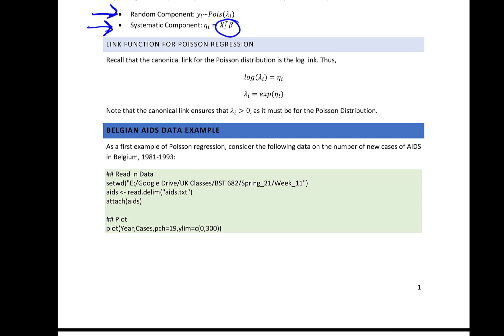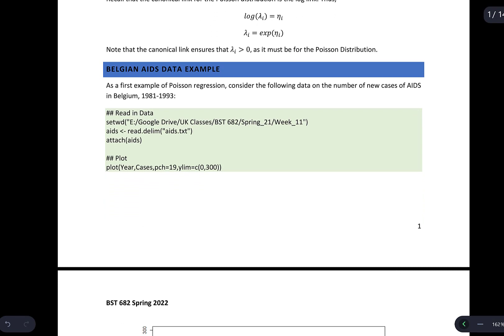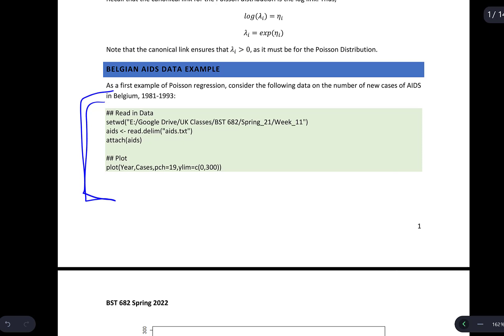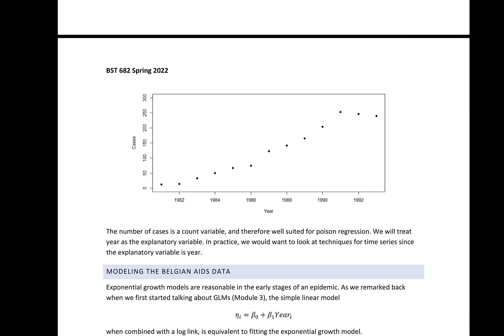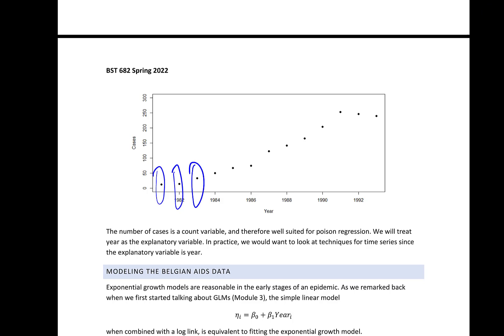Let's start out with an example. We're going to look at data on the number of new AIDS cases in Belgium from 1981 to 1993. Here's some R code on how to read in that data and make a simple plot. Notice that our observations here are in terms of the year — we're looking at the number of cases per year. Our outcome is a count, so this is well suited for Poisson regression.